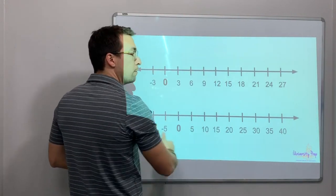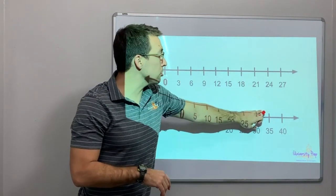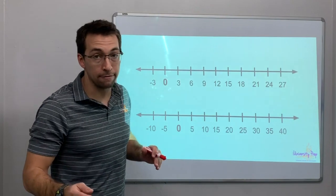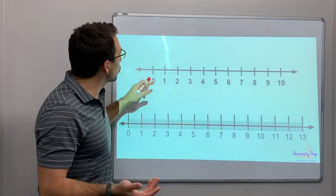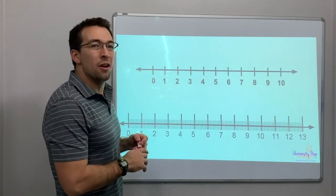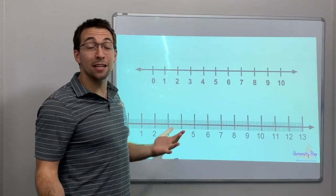With a number line, as you move to the right, you increase in value. So you add numbers going right, you subtract numbers going left. But what if you're trying to increase a value but you don't have a whole number? That's where the decimal comes in.